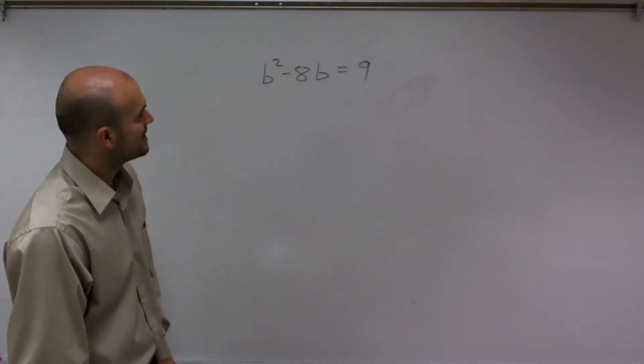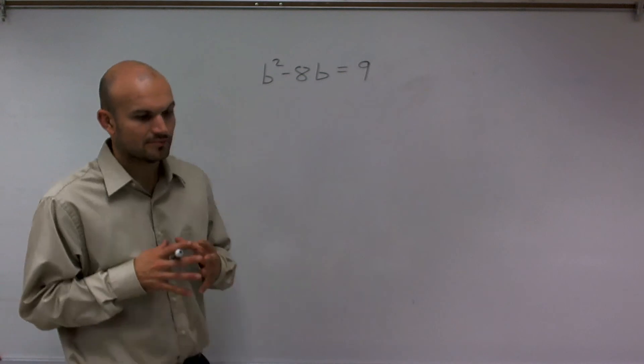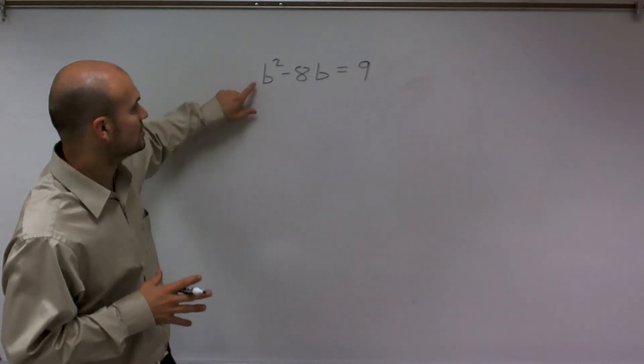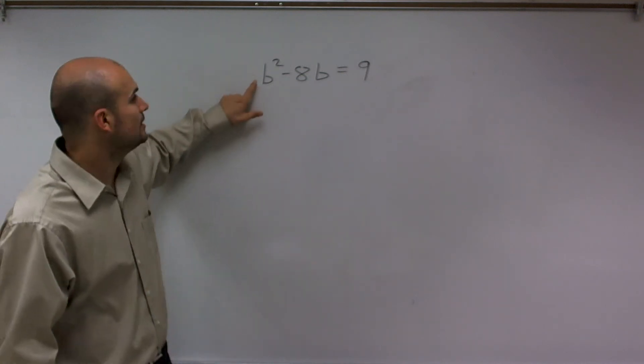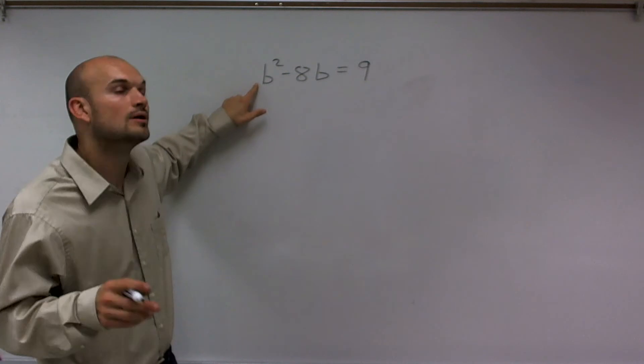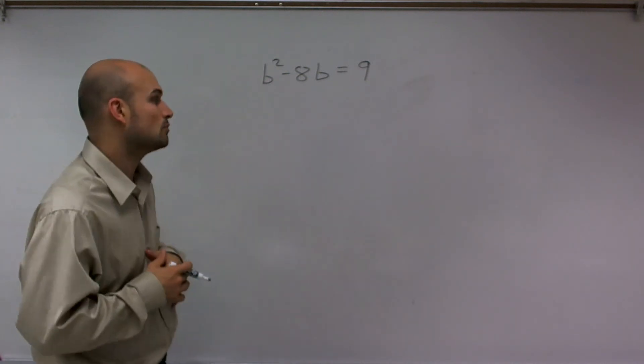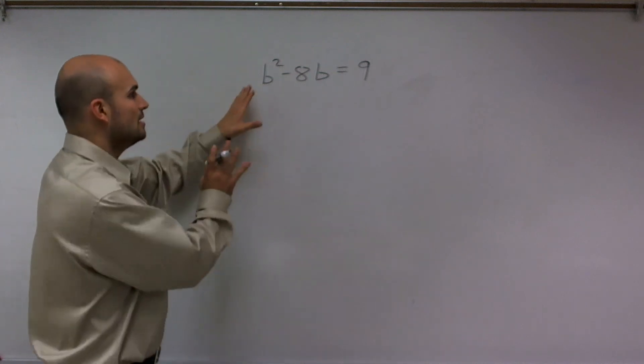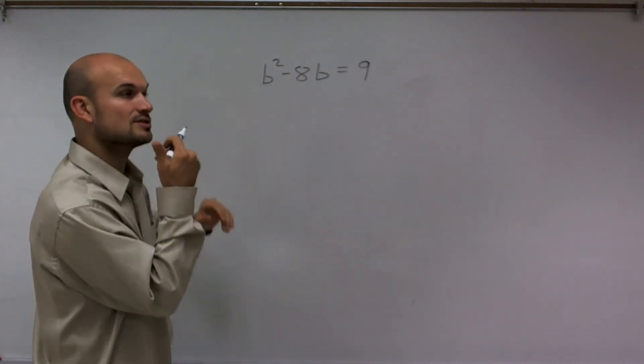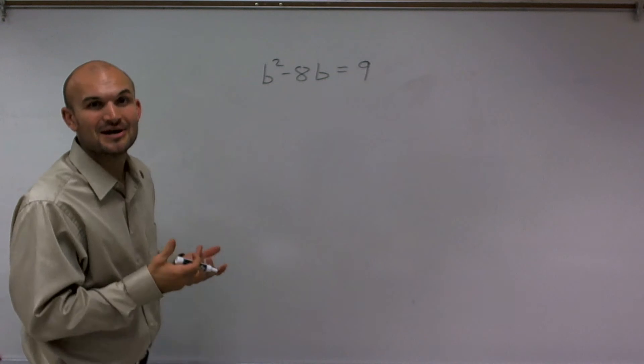We have b squared minus 8b equals 9. The first thing you want to do when completing the square is make sure your coefficient of your squared term is 1. If it's not 1, you'll have to factor out that number. But we notice that this is a 1, so we're in good standing so far.